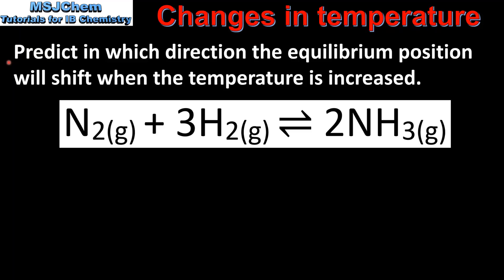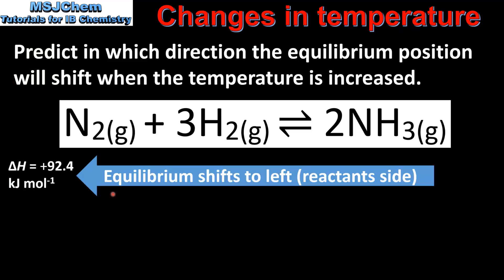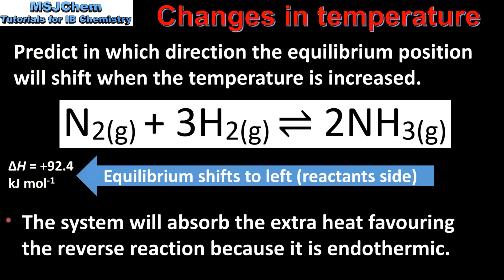When the temperature is increased, the equilibrium position will shift to the left, which is the reactant side. The reason for this is that the system will absorb the extra heat, favouring the reverse reaction because it is endothermic. Therefore the equilibrium position will shift to the left in the endothermic direction.